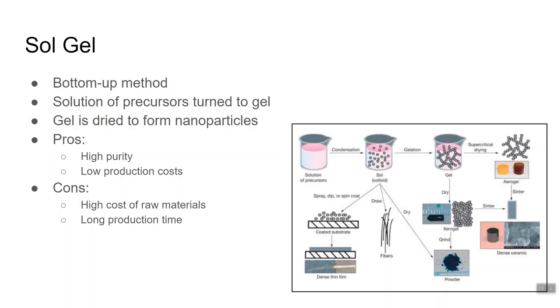If you vary the temperature, time, and agitation during the gelation process, you can end up with nanoparticles. So the advantages of sol gel are low production costs and high purity of nanoparticles. The disadvantages are the high cost of the raw materials for creating the precursor solution, and the long production time from the aging and drying process.